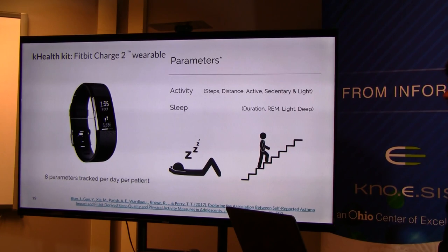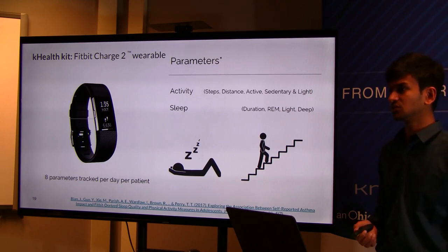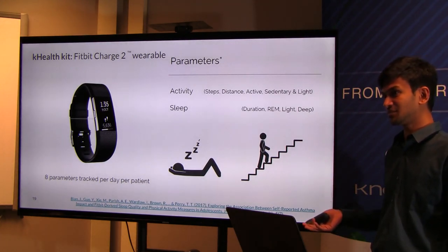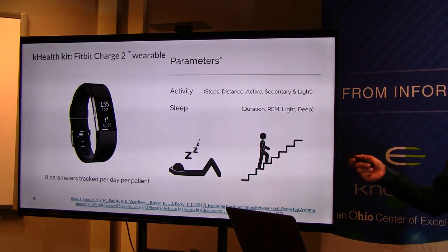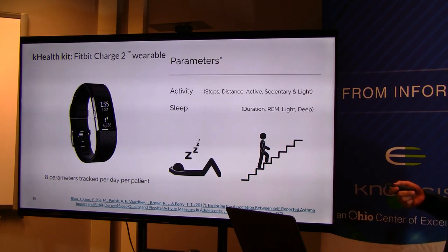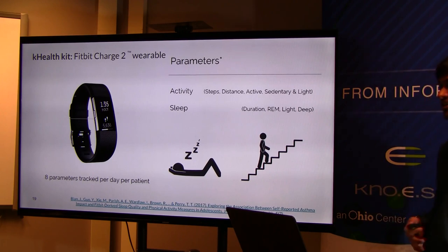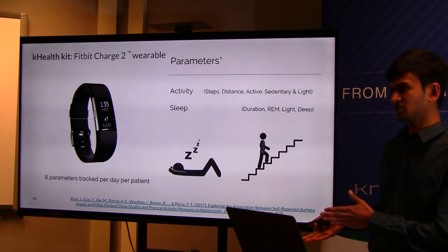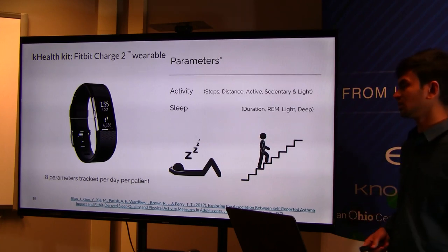We also use a wearable tracker which tracks activity and sleep. Validated studies show relevance between Fitbit-derived activity and sleep versus asthmatic outcomes, showing associations between them. About eight different parameters are captured by this device per patient per day. Activity-related parameters include steps taken, distance covered, calories burnt, and sedentary or lightly active minutes. Sleep parameters include different sleep stages of the patient, captured using a wearable device during sleep, at different durations during the sleep cycle.